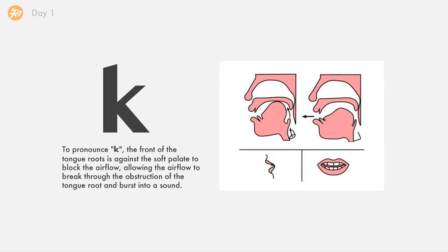The next one is k. To pronounce k, the front of the tongue root is against the soft palate to block the airflow, allowing the airflow to break through the obstruction of the tongue root and burst into a sound.